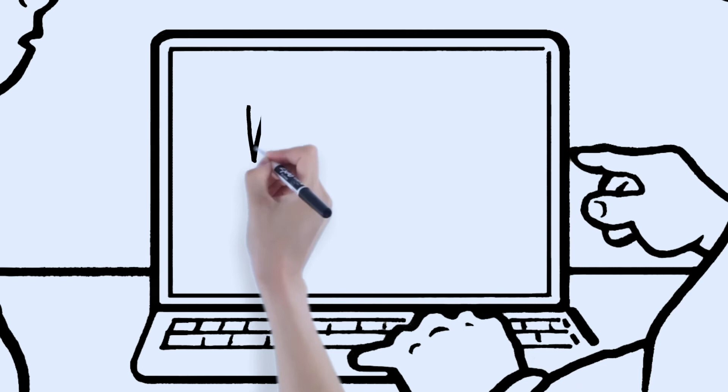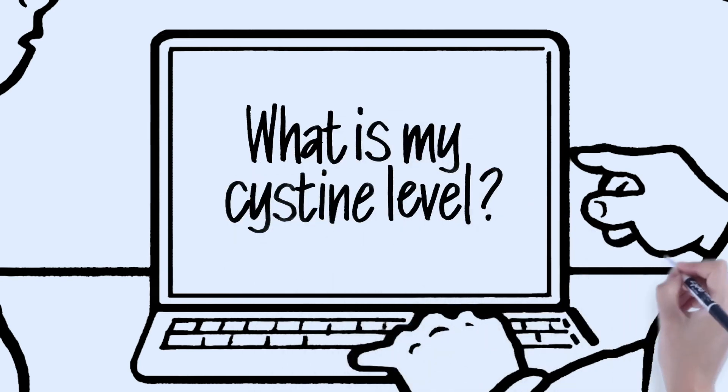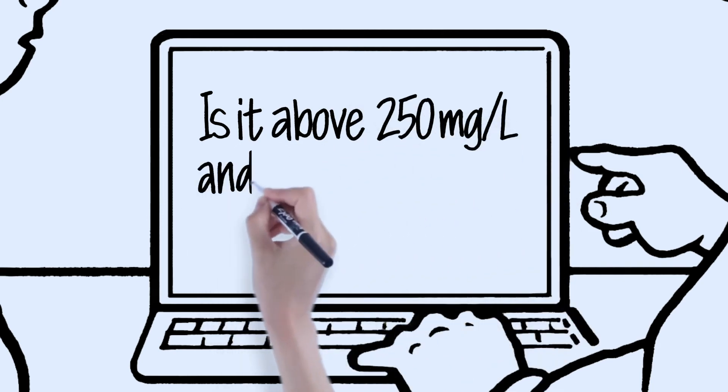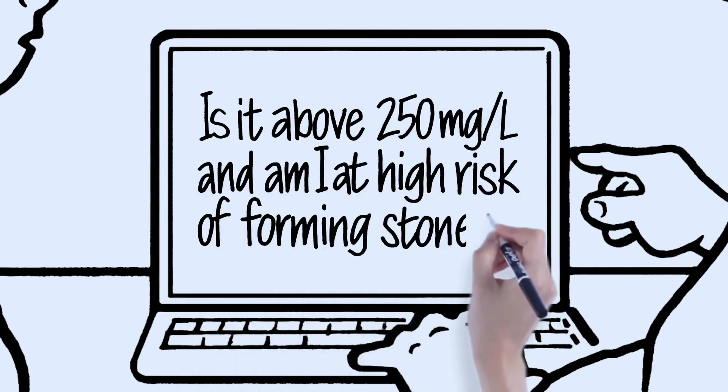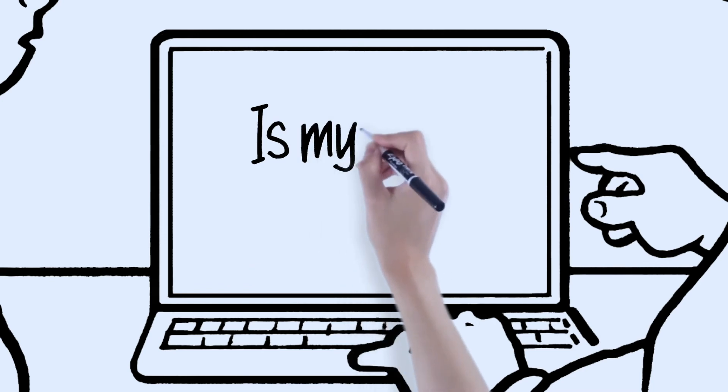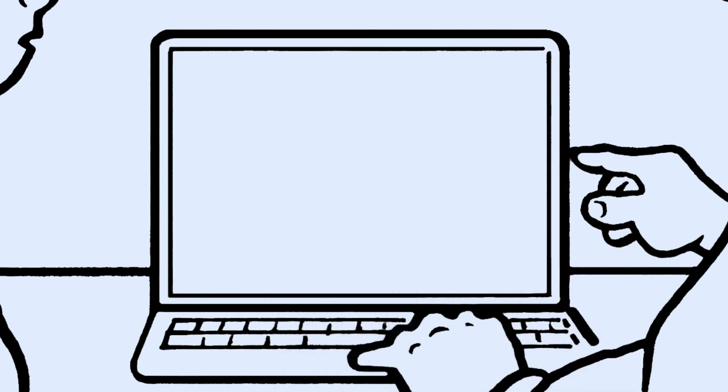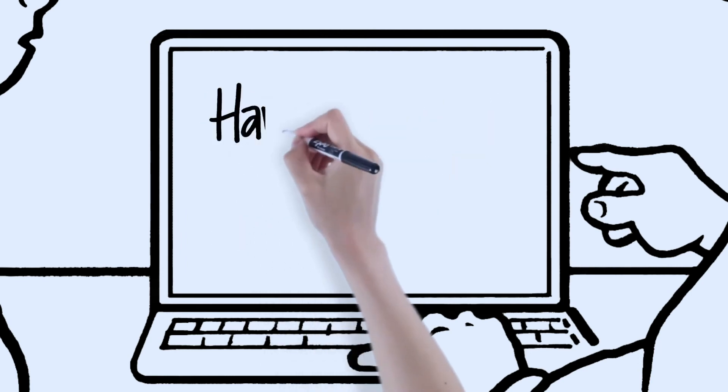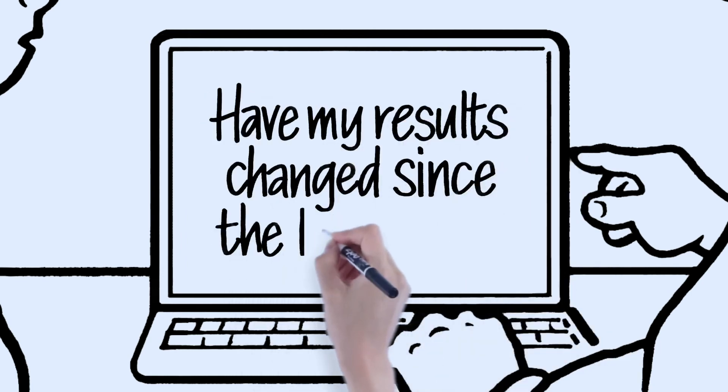Questions to ask your doctor include: what is my cystine level? Is it above 250 milligrams per liter and am I at risk of forming new stones? Is my urine pH too low? Do I need to drink more water or adjust my diet? Have my results changed since the last test?